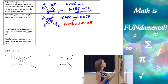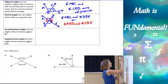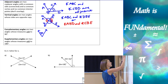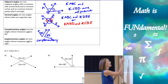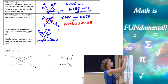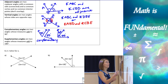Complementary angles are two angles whose measures add to 90 degrees. They can be connected or separate. For example, if I have a 30-degree angle and a 60-degree angle, those would be complementary. You might also see a right angle split up — let's make it 20 and 70 degrees. Again, they add to 90, so those are going to be complementary angles.